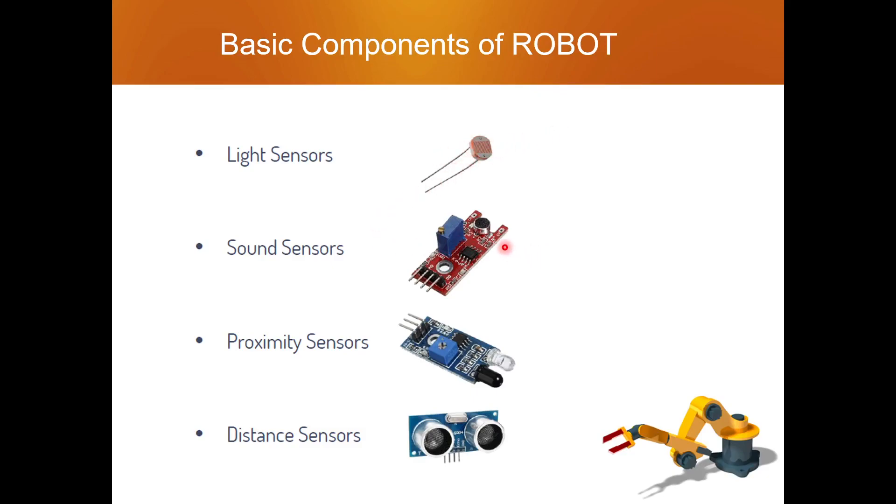Then we have sound sensors. These sensors are used to detect any kind of sound. If there is a sound, it will automatically start working. This is called proximity sensors. Here we have two LED lights for picking signals. Proximity sensor, as the name says, proximity means something. It detects if it is having something near it. That's called proximity sensor.